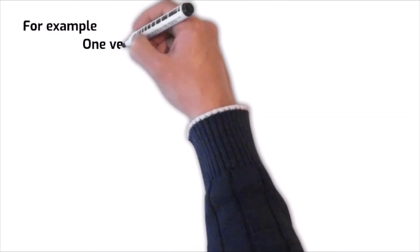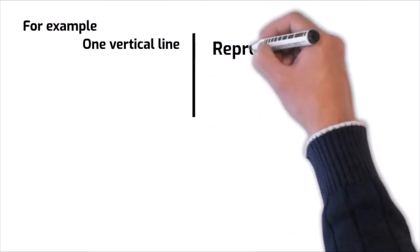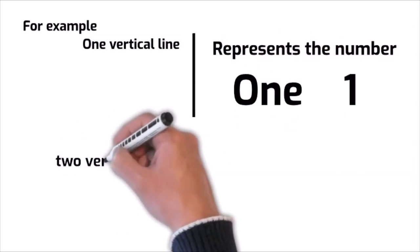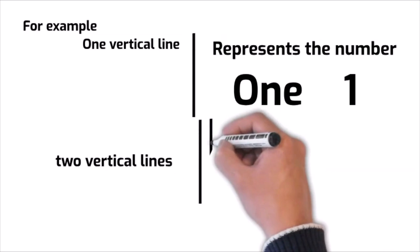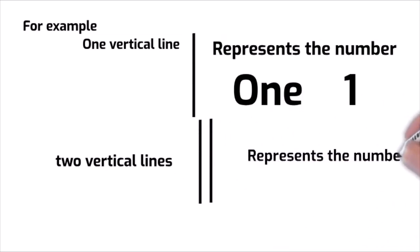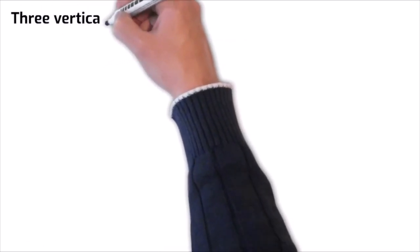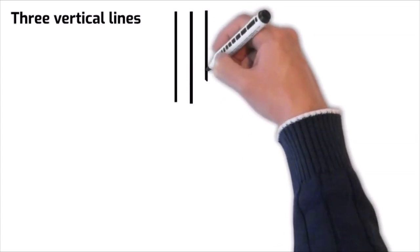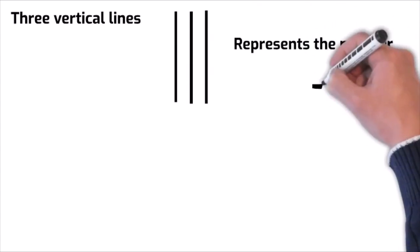For example, one vertical line represents the number one. Two vertical lines represent the number two. Three vertical lines represent the number three.